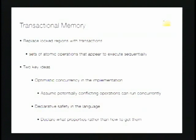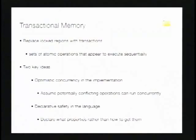When we apply transactions to memory, there are two key ideas. The first is optimistic concurrency: although things appear to execute sequentially, we want to execute them concurrently as much as possible and leave it to the system to figure out how to make that safe. The second is declarative safety in the language — the programmer focuses on what safety properties they want, and the system figures out how to achieve them efficiently.